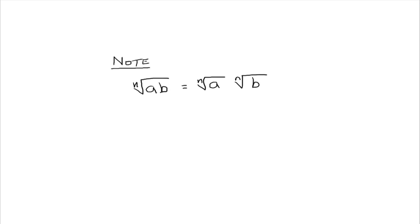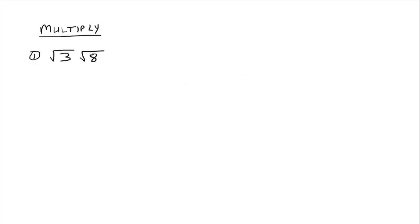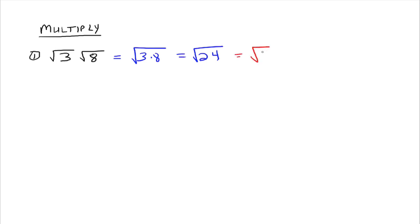For example, say we have the square root of 3 times the square root of 8. They're both square roots, so the indices are both 2. We can rewrite that as the square root of 3 times 8, which is just the square root of 24. Can we simplify the square root of 24? Sure — the square root of 24 can be simplified to the square root of 4 times the square root of 6, which gives us 2 radical 6.